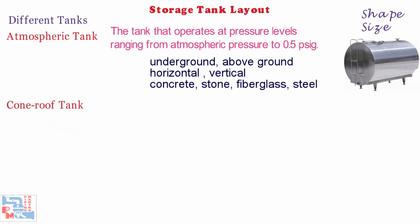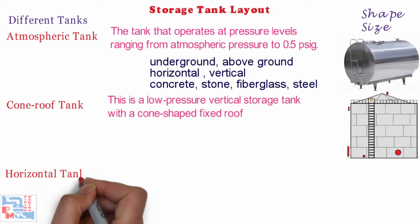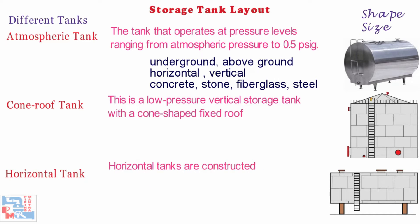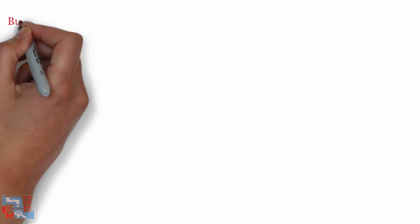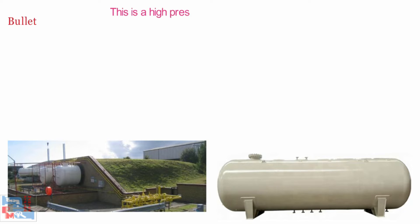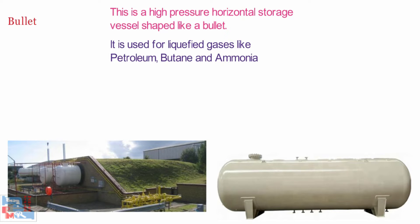Next is the Cone Roof Tank — this is a low-pressure vertical storage tank with a cone-shaped fixed roof. Then comes Horizontal Tanks, which are constructed such that the length of the tank is not greater than 6 times the diameter to ensure structural stability and integrity. Next is the Bullet — a high-pressure horizontal storage vessel shaped like a bullet, usually preferred to store liquefied gases like petroleum, butane, and ammonia, for which the boiling point is low.